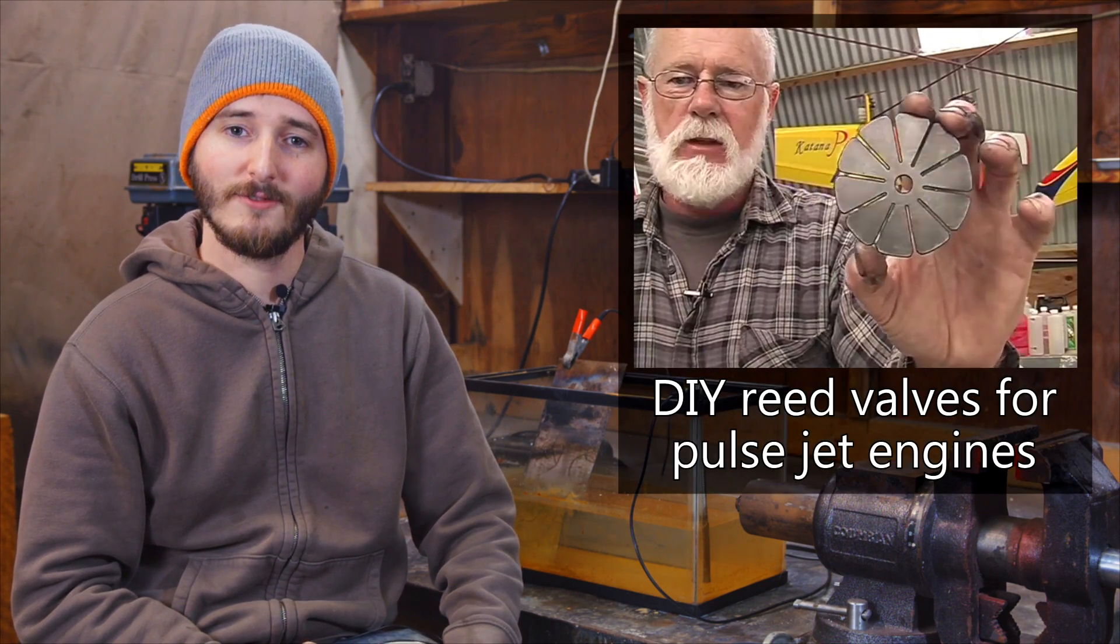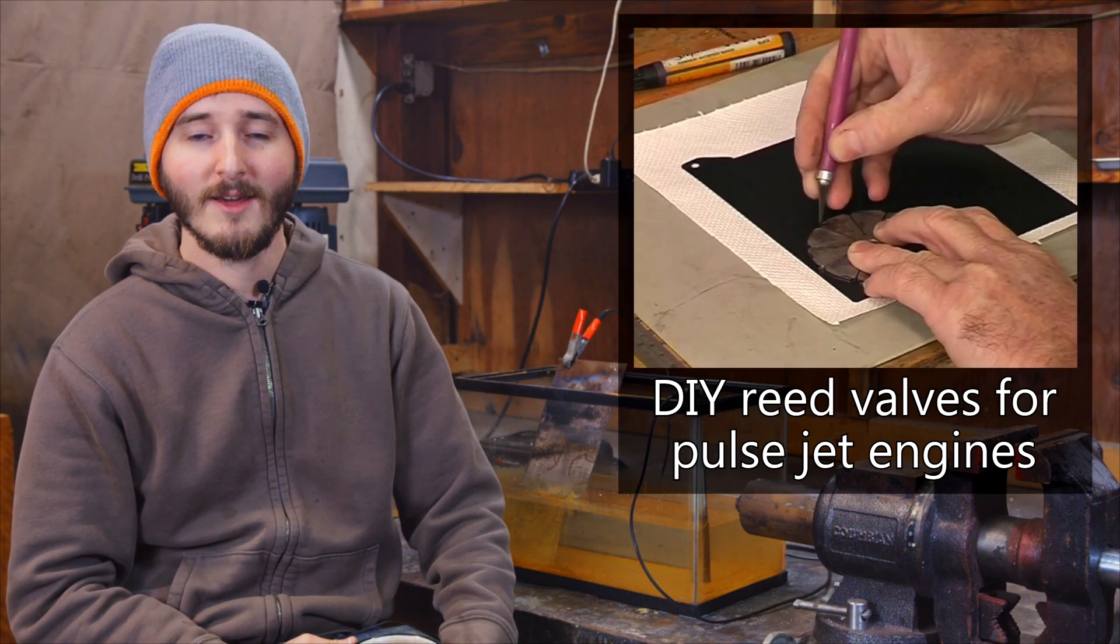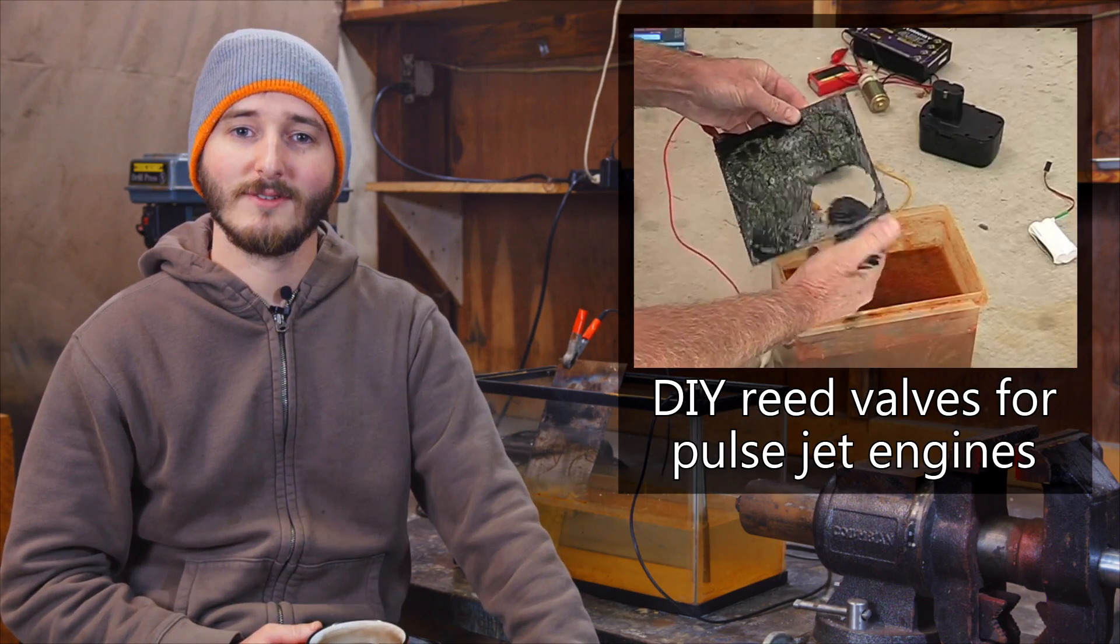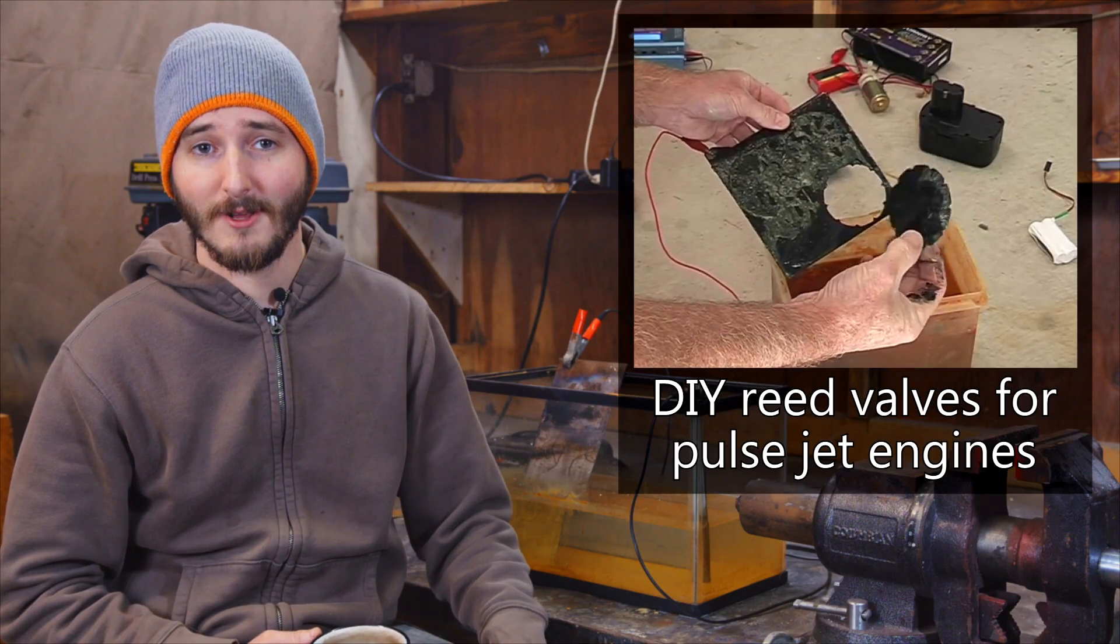So in any case, this project is how to cut metal with electrolysis. The first place I came across this idea was in a video published in 2010 about how to make pulsejet reed valves from spring steel. I'll give you a link in the video description below.